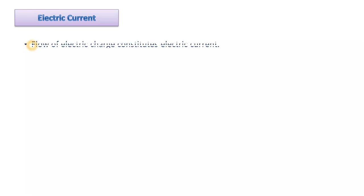Electric current is the flow of electric charges. The question is: what are these charges? A substance can be positively charged, negatively charged, or neutral. Any particle which carries a charge is called a charged particle. We will talk about electric charge in more detail later.